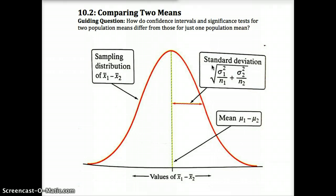Think about how this is different and similar to when we just used one sample mean. Here we have a nice picture of our normal curve. Here's our true mean, mu1 minus mu2. For a significance test, we'd center it around that.